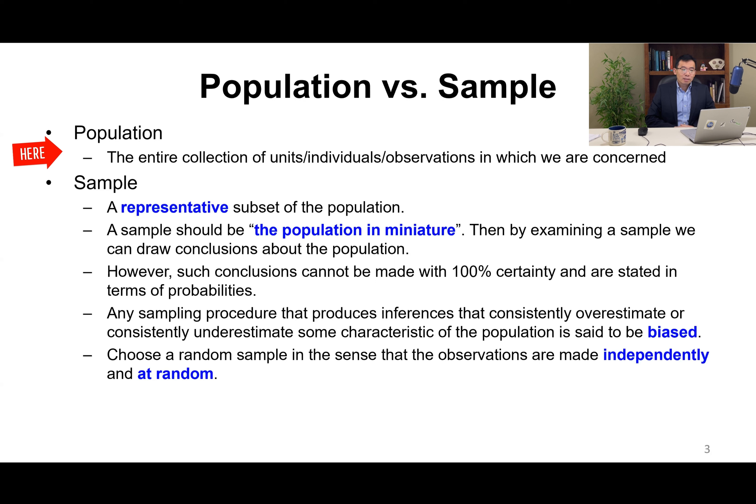Population is an entire collection of units, individuals, or observations in which we are concerned. Sample, by its name, is smaller. Sample is a representative subset of the population, often called the population in miniature. Then, by examining a sample, we can draw conclusions about the population.